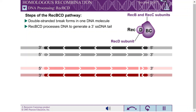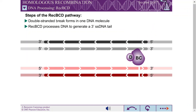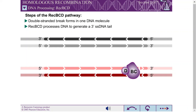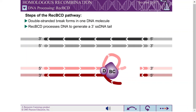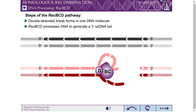REC-BCD is composed of three protein subunits that are the products of the REC-B, REC-C, and REC-D genes. REC-BCD binds to the DNA at the site of the double-stranded break. REC-BCD has both helicase and nuclease activities. It tracks along the DNA, unwinding the DNA, and frequently cleaving each strand. The cleaved DNA is destroyed.